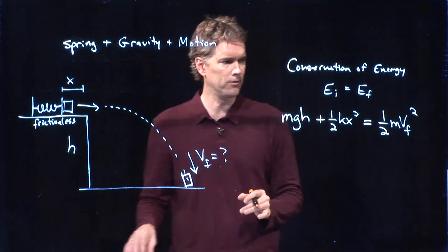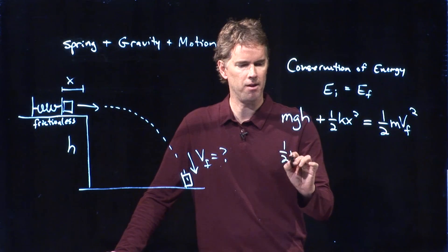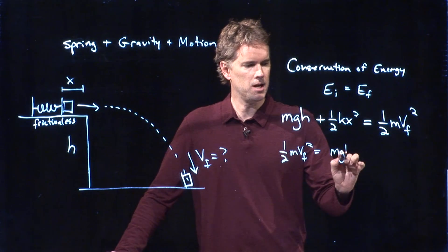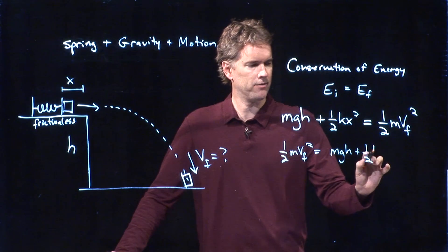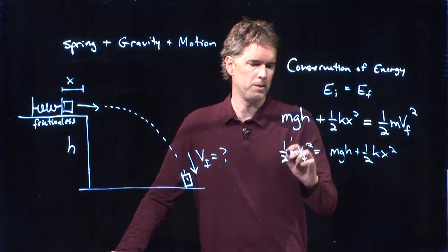And now we can solve this for VF. Let's rewrite it. One half M VF squared equals MGH plus one half KX squared. I can multiply everything by 2.